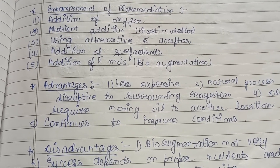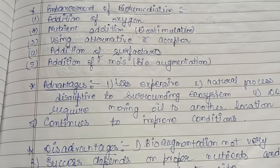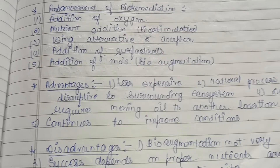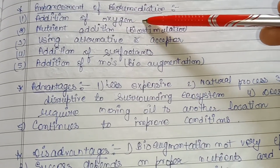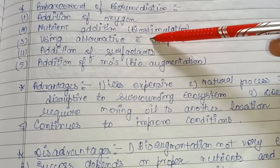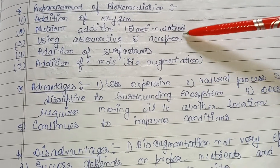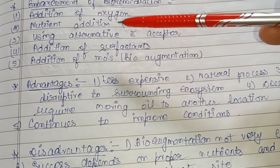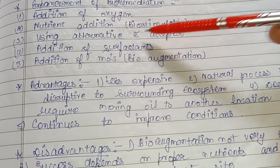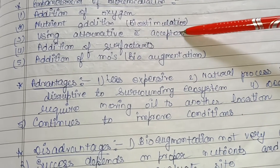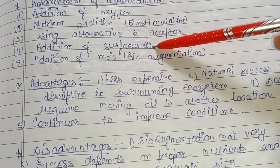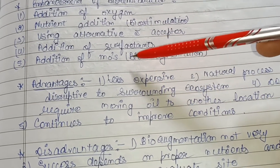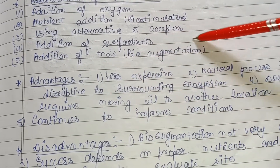Enhancement of bioremediation for marine oil pollutants can be achieved by: addition of oxygen; nutrient addition using bio-stimulation; using alternative electron acceptors; addition of surfactants; and addition of microorganisms through bio-augmentation to enhance the natural process.